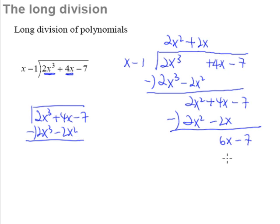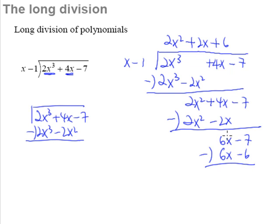So far so good. Something multiplied by x gives positive 6x, so that something is 6. Then 6 multiplied by negative 1 gives negative 6. Subtracting: 6x minus 6x is zero, and negative 7 minus negative 6 gives negative 7 plus 6 equals negative 1 as the remainder. So that is how we do long division for polynomials.